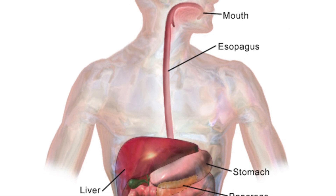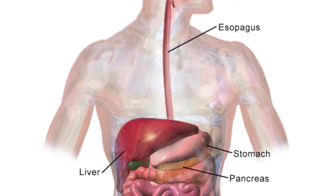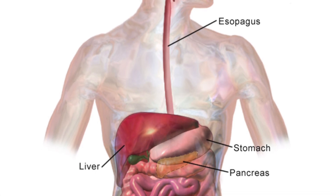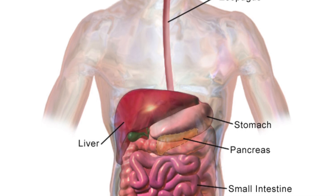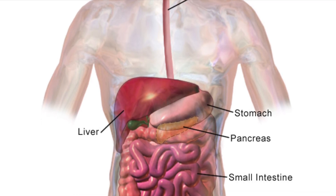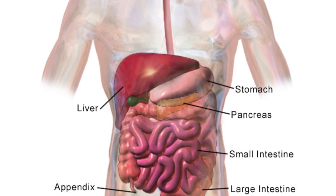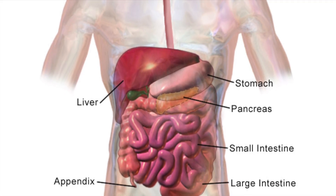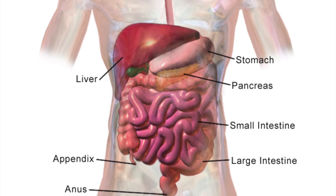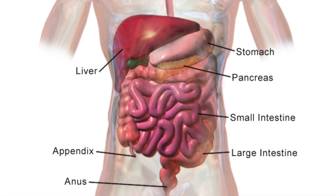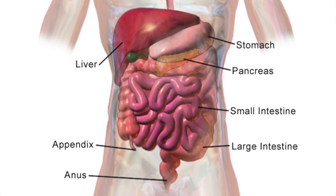Enzymes are used a lot in digestion because your food is made of large insoluble molecules which cannot be absorbed. These need to be broken down or digested to form smaller soluble molecules, and that is controlled by enzymes. Most enzymes work inside the body; however, digestive enzymes are produced in specialized cells in glands like the pancreas. The muscles of the gut then move your food along from one area to the next.